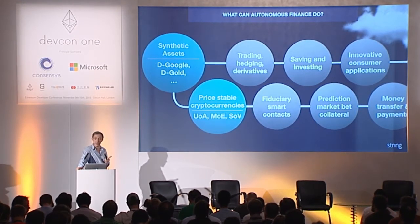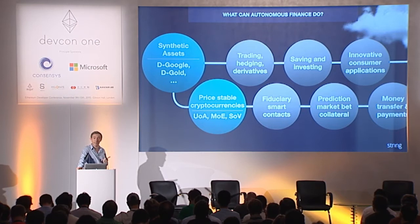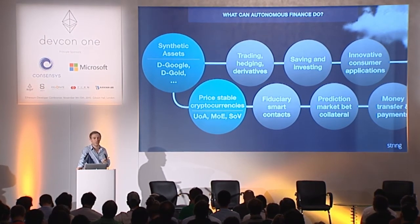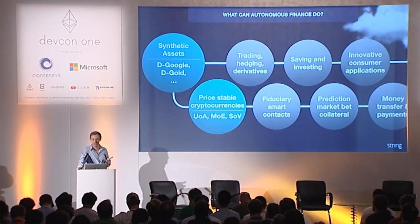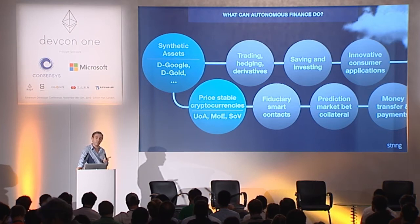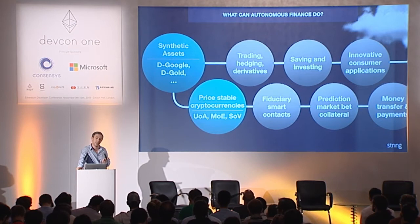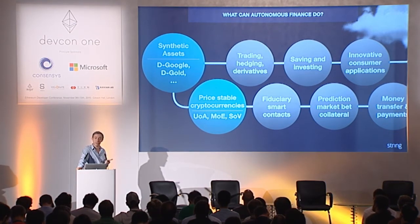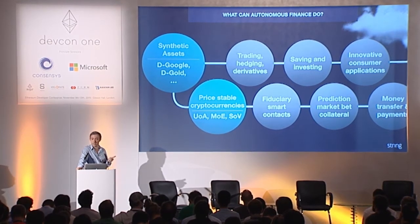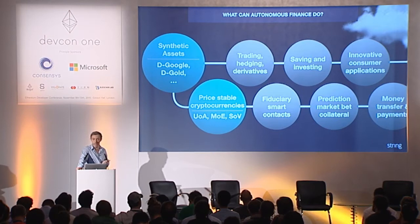Another thing we can do is create price-stable cryptocurrencies. You might imagine a cryptocurrency called Phi, created by blending D-Gold and D-USD. This would be liquid and price-stable, so we could use it as a unit of account, a medium of exchange, and a store of value — and in turn, it could power fiduciary smart contracts, prediction markets, and money transfer and payments.